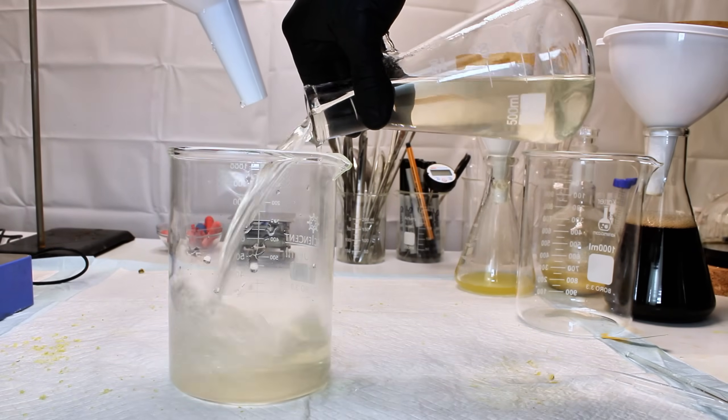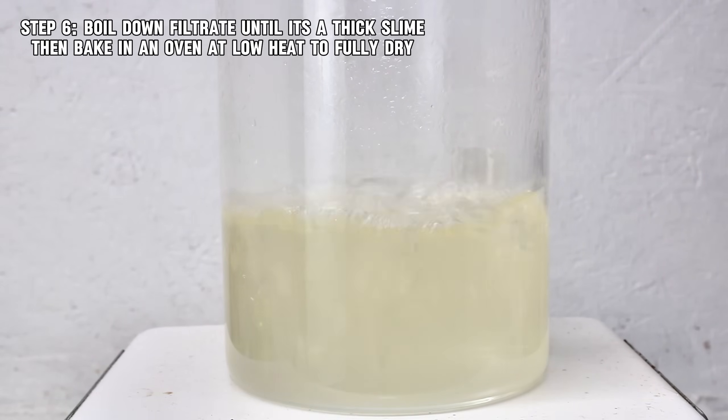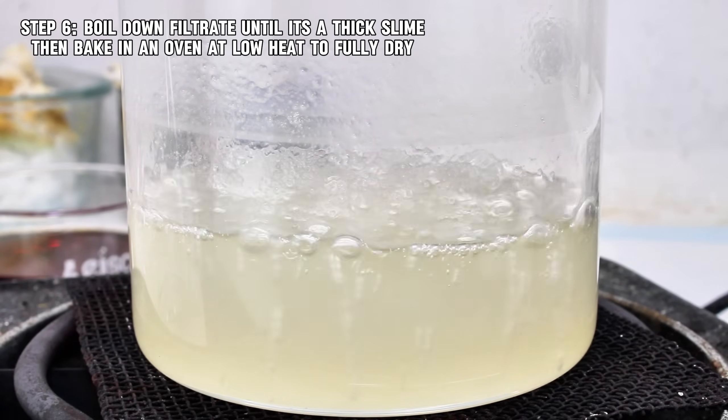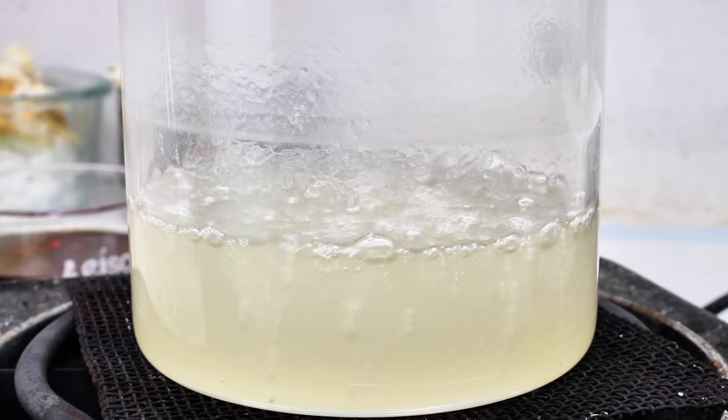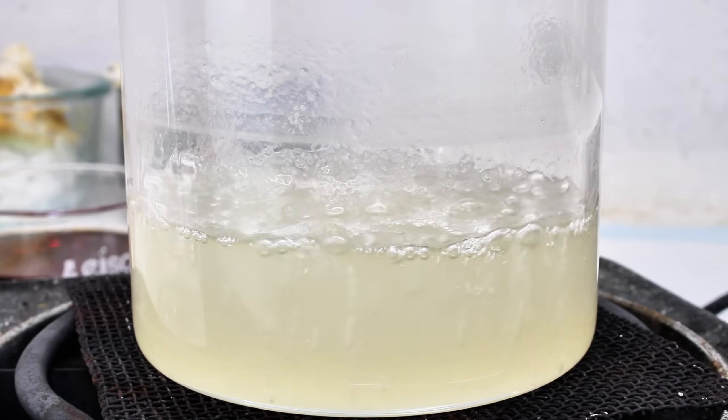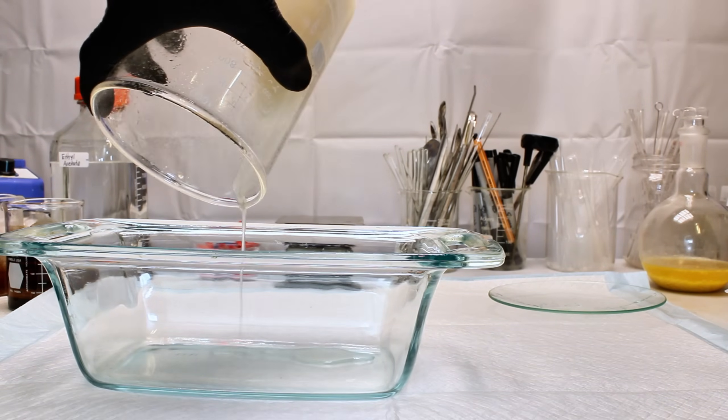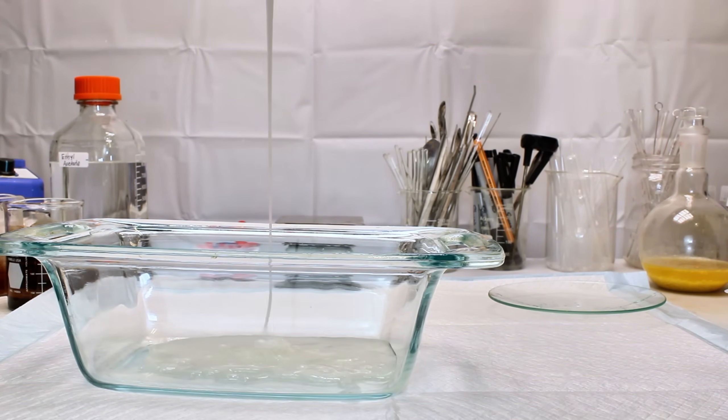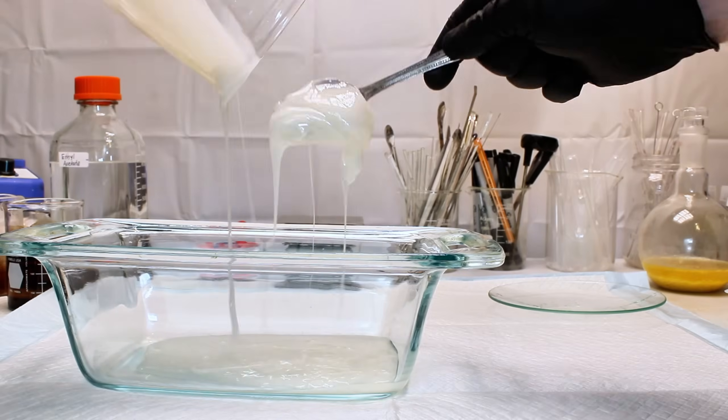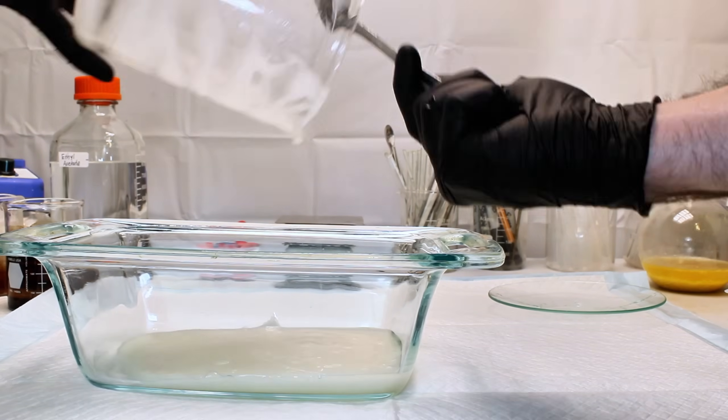The filtrate was then returned to the beaker and boiled down until a gooey slime remained. Calcium nitrate is extremely hygroscopic, as I mentioned earlier, and virtually impossible to crystallize. To that end, the slime was transferred to another dish and baked in an oven at 100 degrees Celsius until it had dried completely.